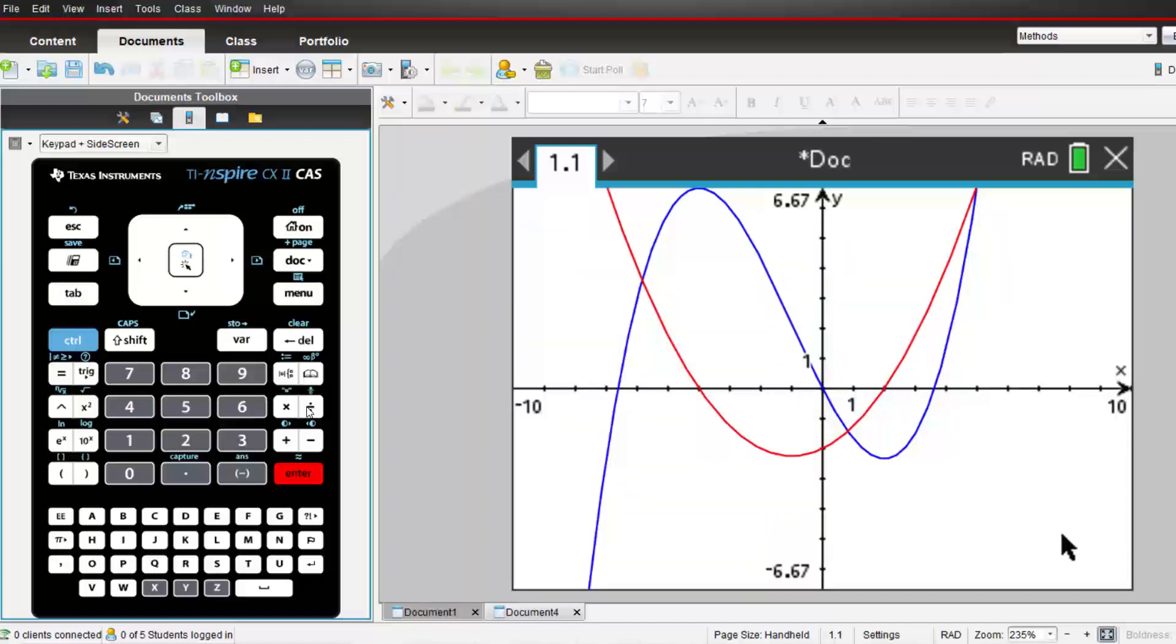We can see the original function has a negative gradient in this region here. To make it easier to focus on the gradient function, I'll hide the original graph.